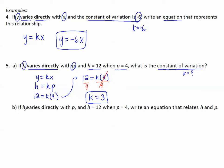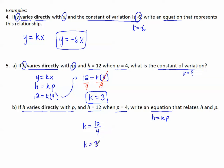Part B: write an equation that relates h and p. The equation is h equals k times p. We found k equals 3 from dividing one value by the other when they vary directly. So our equation is h equals 3 times p.